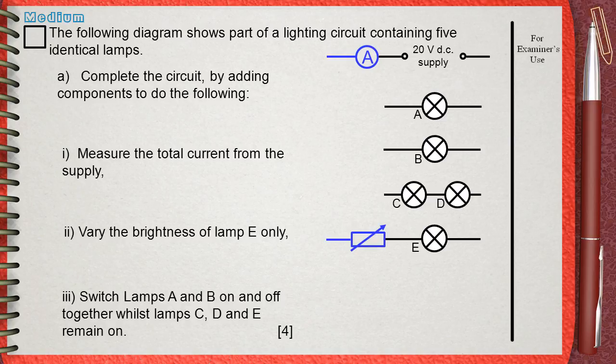Don't worry, the circuit will be closed at the end. Number 3: he wants something to switch lamps A and B on and off together, whilst lamps C, D and E remain on.